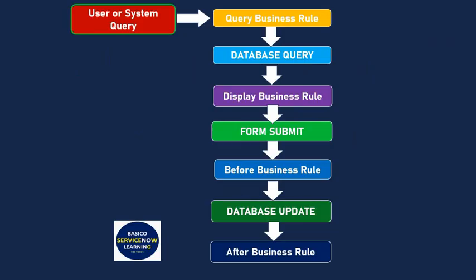Here we have a flow diagram with several blocks. The flow starts from a user or system query. Once the user or system queries, the query business rule runs immediately — query business rule runs in each and every interaction with the database. After that, the query reaches the database, and once the database is queried, it returns the output.